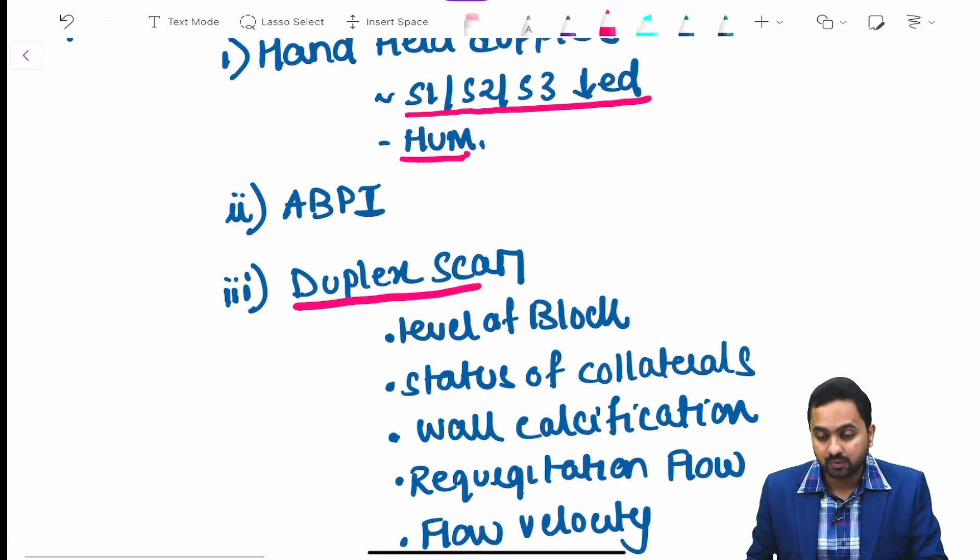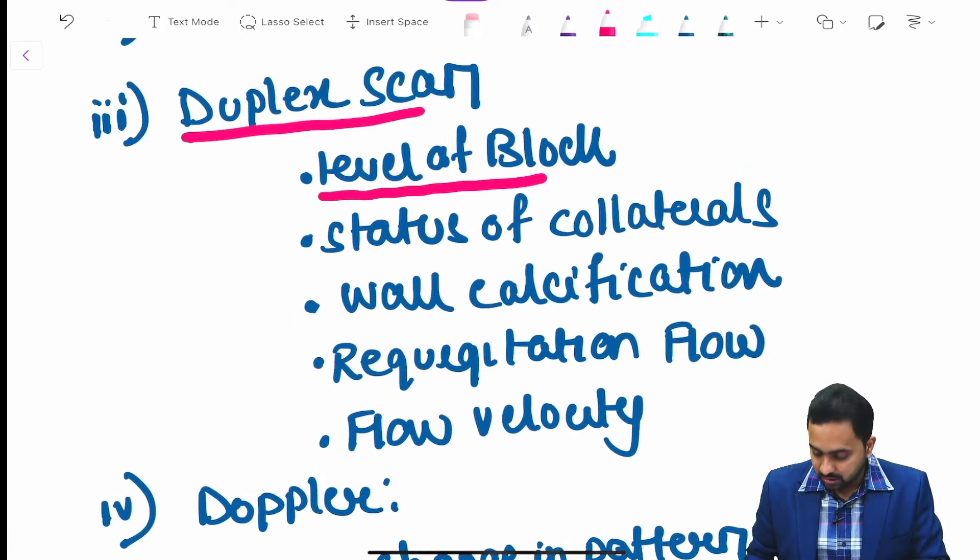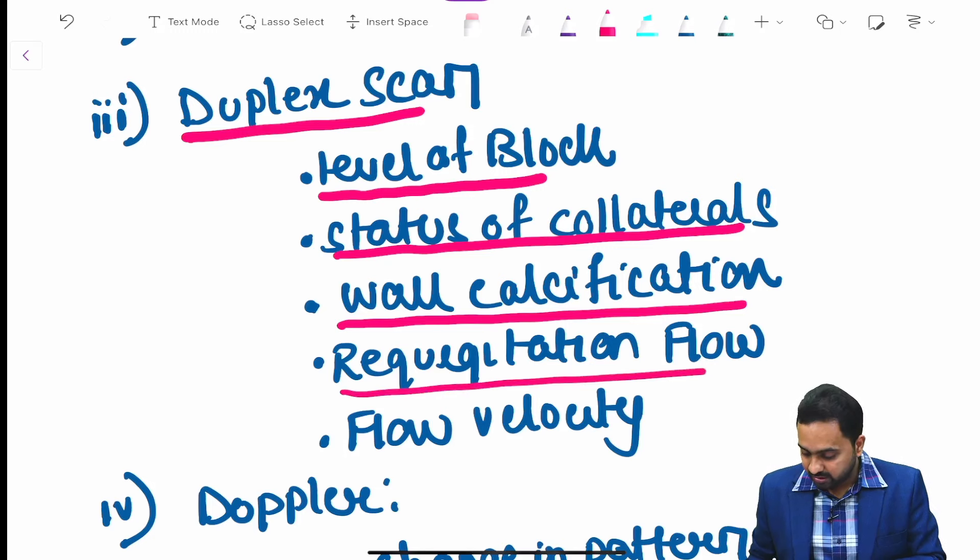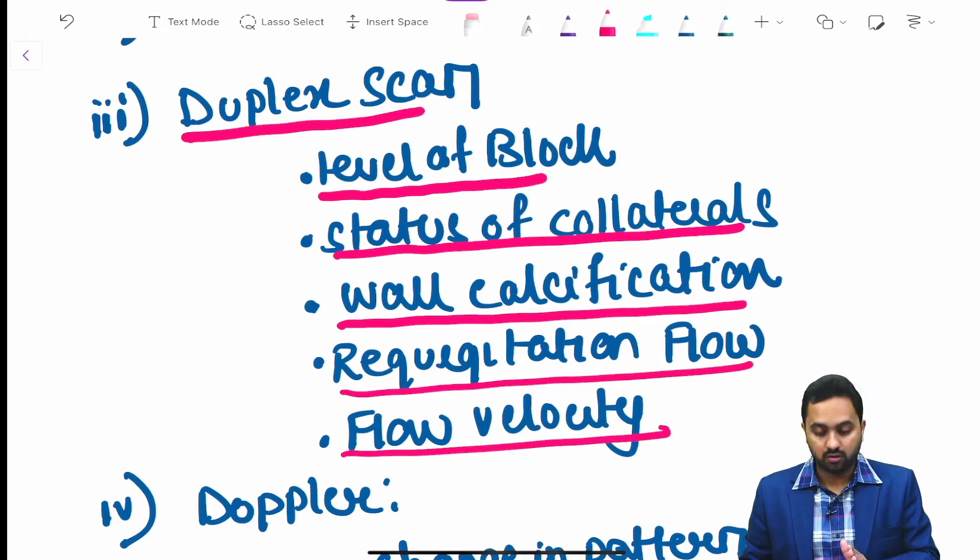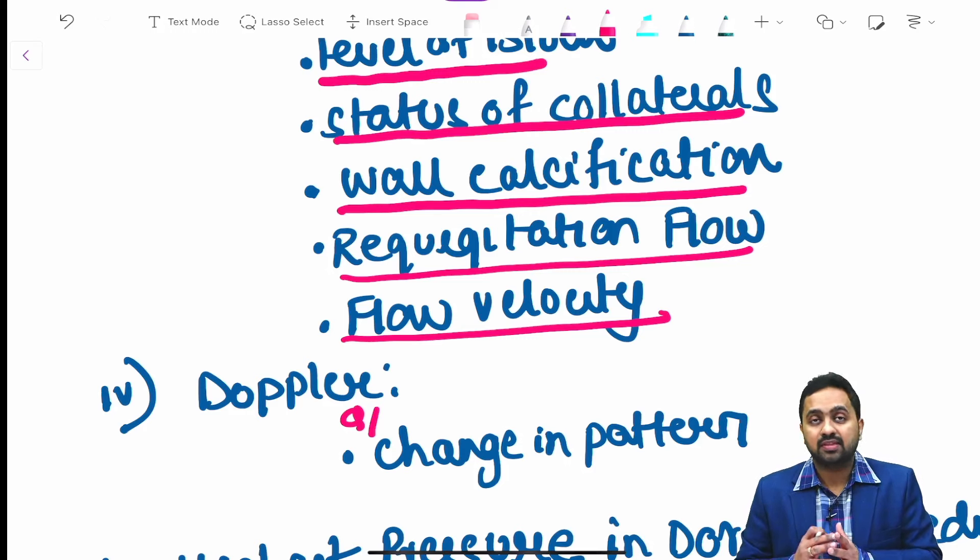The duplex scan gives us idea about the level of block, status of collaterals, calcification of walls, regurgitation and flow if present, and flow velocity. The Doppler suggests regarding change in pattern. The normal pattern is usually triphasic. If there is any change in pattern, that can be detected on Doppler flow.